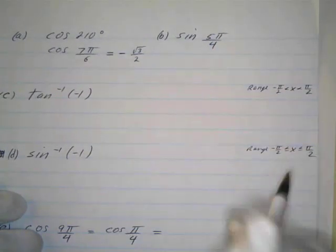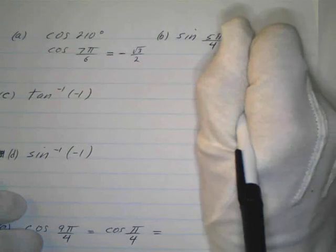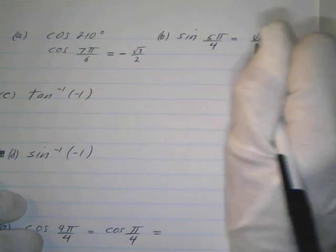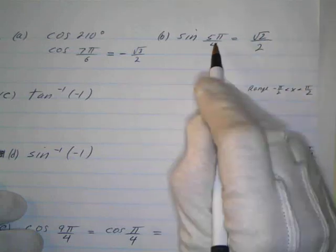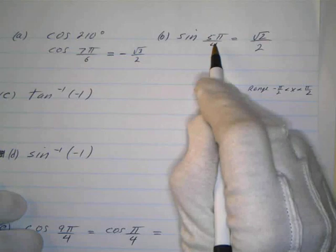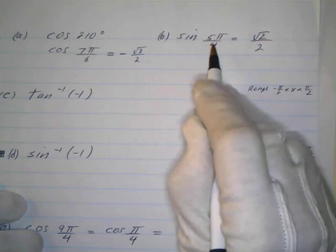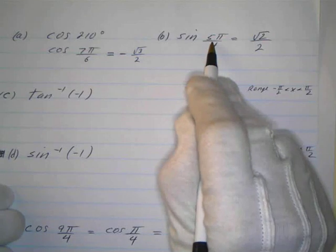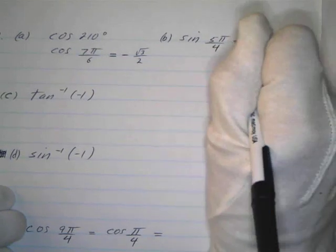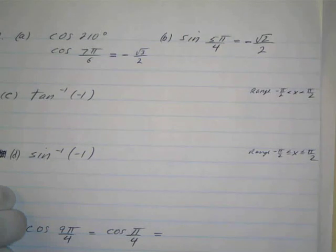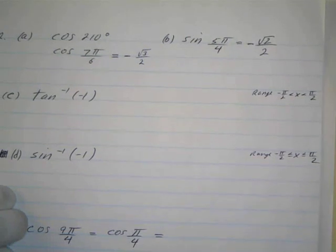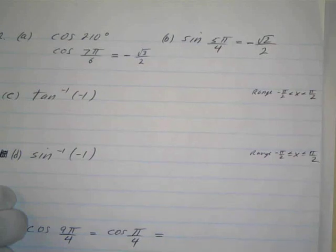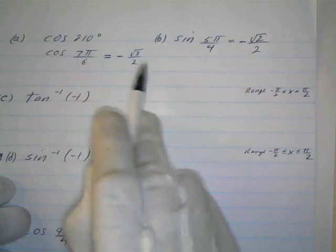Part B: the sine of 5π/4. The π/4 family values are all √2/2 — the sine of π/4 is √2/2. We just have to worry about the quadrant. Since 4π/4 is π (the line), 5π/4 puts us into the third quadrant. By 'All Students Take Calculus,' the third quadrant is negative — sine is positive only in the first and second quadrants. So the answer is -√2/2.